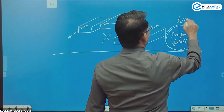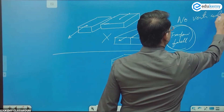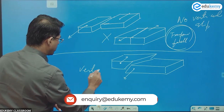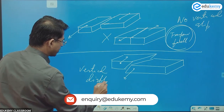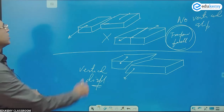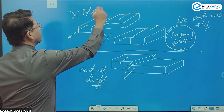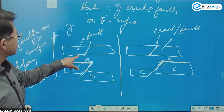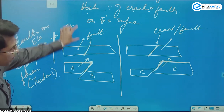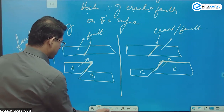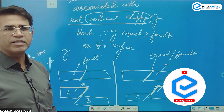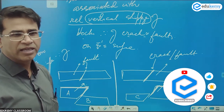In transform faulting there is no vertical displacement — this has not gone above or come down — so this will not create a block mountain. Vertical slippage is what creates a block mountain. Cracks and faults are the same things.